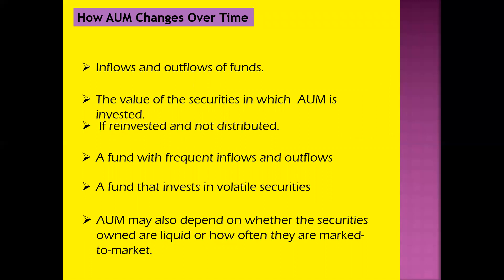The next thing we will talk about is how AUM changes over time. The amount of Assets Under Management changes due to various reasons. The first is inflows and outflows of funds. Investors in a mutual fund may increase or reduce the size of their investment by buying additional shares or by selling shares they already own, which will change the total size of the fund's AUM. So if an investor increases or decreases their investment, the total size of the AUM changes accordingly.